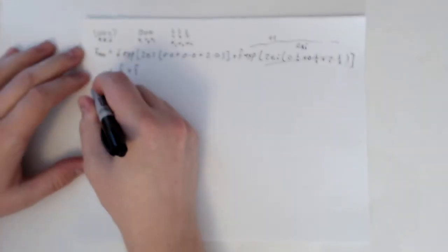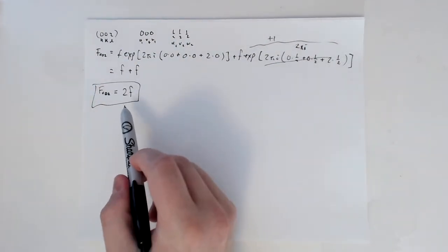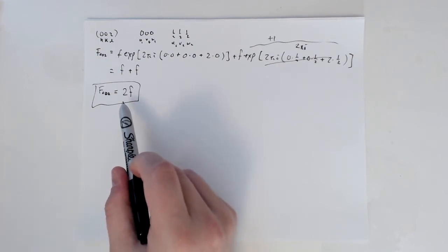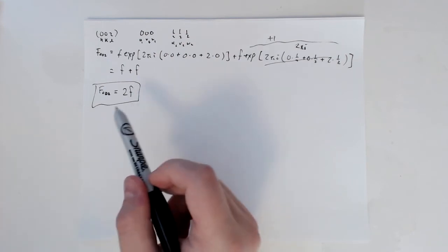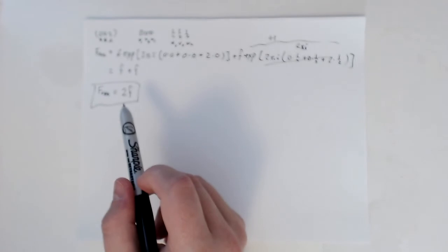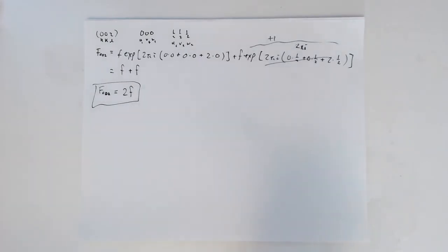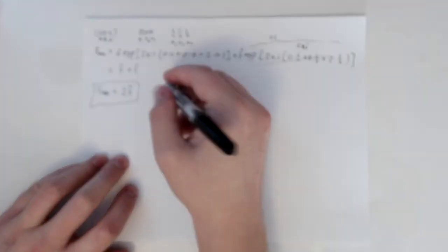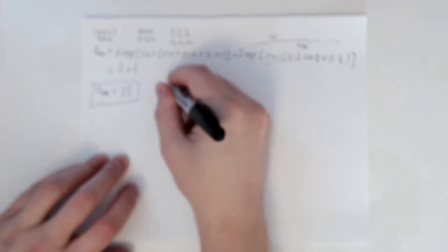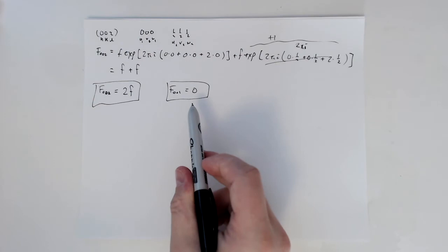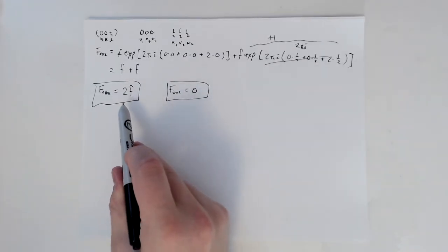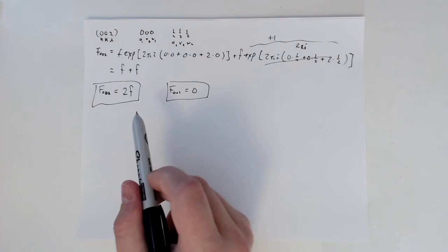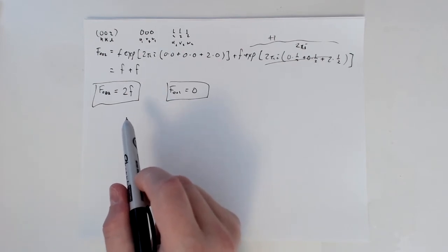This tells us not only that we will have a diffracted intensity for the (0,0,2) plane, but also gives us the magnitude: 2 times the atomic scattering factor — larger than for a simple primitive position. The structure factor lets us calculate whether we expect a peak and also gives us its magnitude, which is very useful when comparing real diffraction patterns.